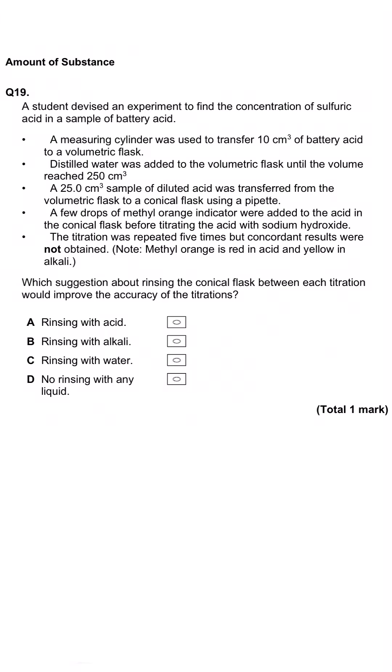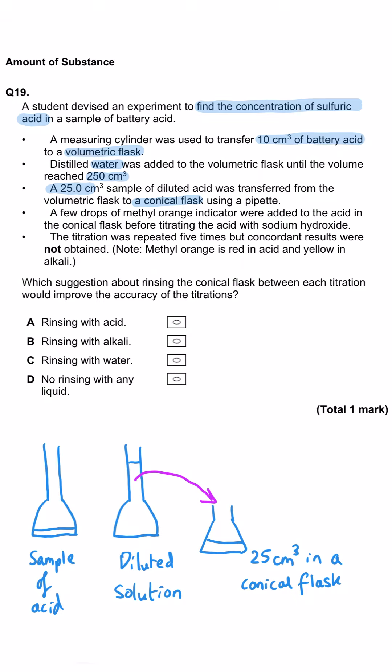This is a titration method question where they're trying to find the sulfuric acid concentration in battery acid. First, they get a 10 cm cubed sample of the acid, put it into a volumetric flask, make the volume up to 250 cm cubed, then after inverting to mix, take a 25 cm cubed sample out, put it into a conical flask, add methyl orange indicator. That's necessary because sulfuric acid is a strong acid, and then do a titration with sodium hydroxide. The titration was carried out five times but concordant results were not obtained. That means the results were all over the place with no consistency.